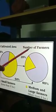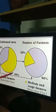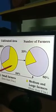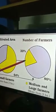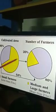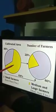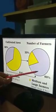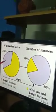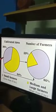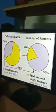The second pie chart shows number of farmers. Though 64% of the cultivated area is occupied by medium and large farmers, they represent only 20% of the total farmers. That means 20% of farmers occupy 64% of the land area, whereas 80% of farmers occupy only 36% of the land area. This is the actual picture of most Indian villages.